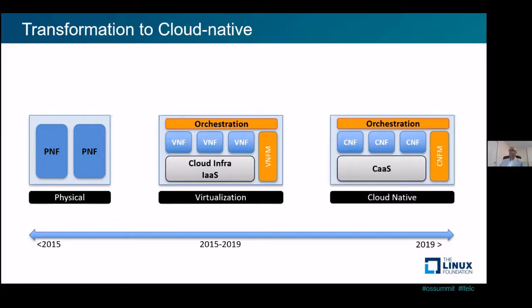Now the VNFs are being transformed to cloud native functions, taking advantage of Kubernetes and cloud native technologies like service mesh. Also, the orchestration layer is transforming from the ability to orchestrate virtual machines to orchestrating containers as well. In the next slide we will see how the CNFs are used in a typical 5G core network.